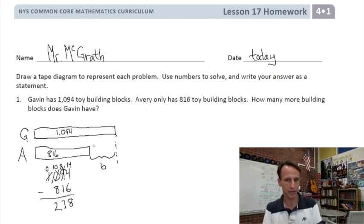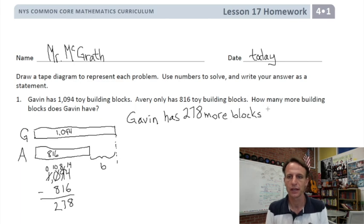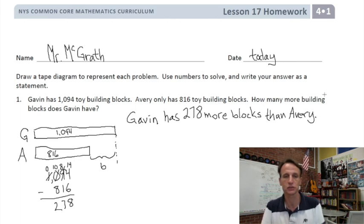So now we drew our tape diagram, we solved it with numbers, and now we'll write our answer as a statement. B here is 278. So Gavin, lucky, fortunate, well-endowed fellow that he is, has 278 more blocks than poor Avery. That's number one.